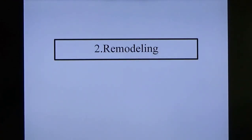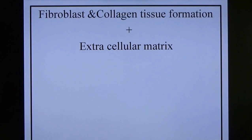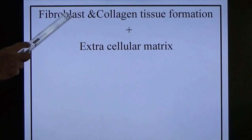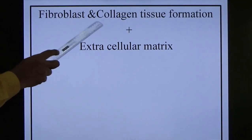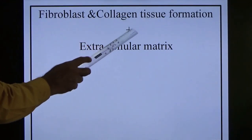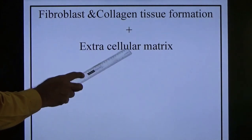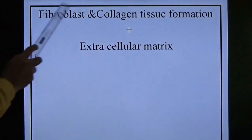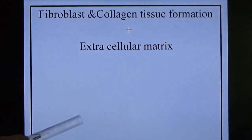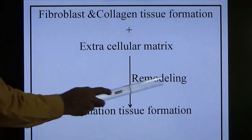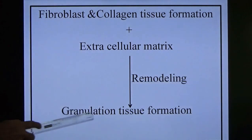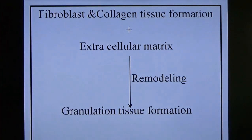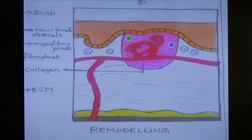Remodeling: the fibroblast, collagen tissue, and extracellular matrix — these three components come together. With the help of remodeling, formation of granulation tissue occurs.